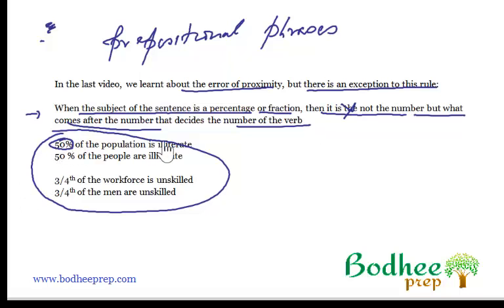50% is illiterate. 50% are illiterate. So why this variation? If the subject of the sentence is 50%, it alone should have decided the number of the verb. But it is not doing that because 50% of what? 50% of the population. And population is a singular noun. So, 50% of the population is illiterate.